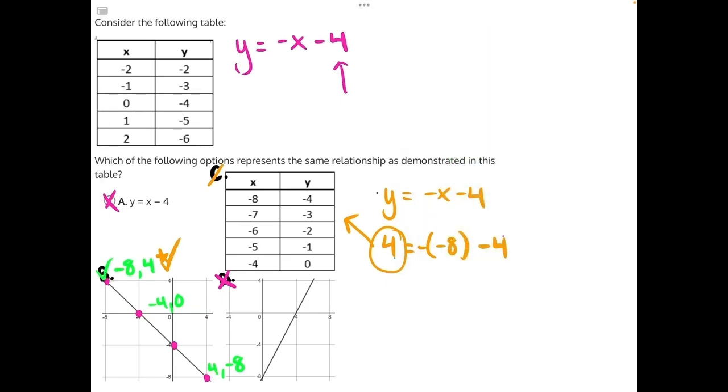Let's grab a new color, and let's plug in the next set of points, which is negative 4 comma 0. So we'll have 0 is equal to y, and then we will have negative 4 as x.